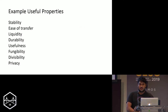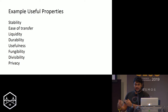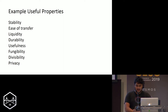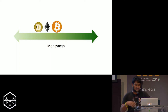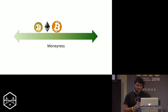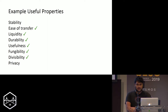What defines an asset with high moneyness? These useful properties aren't what define moneyness per se, but assets that have all of them tend to have high moneyness: stability, ease of transfer, liquidity, durability, usefulness, fungibility, divisibility, and privacy. Most cryptocurrencies like Ether, Bitcoin, and Dogecoin satisfy almost most of these properties. Bitcoin has the highest moneyness of the three; Dogecoin probably not so much. The two properties they really fail on are privacy — though we're getting there — and stability.